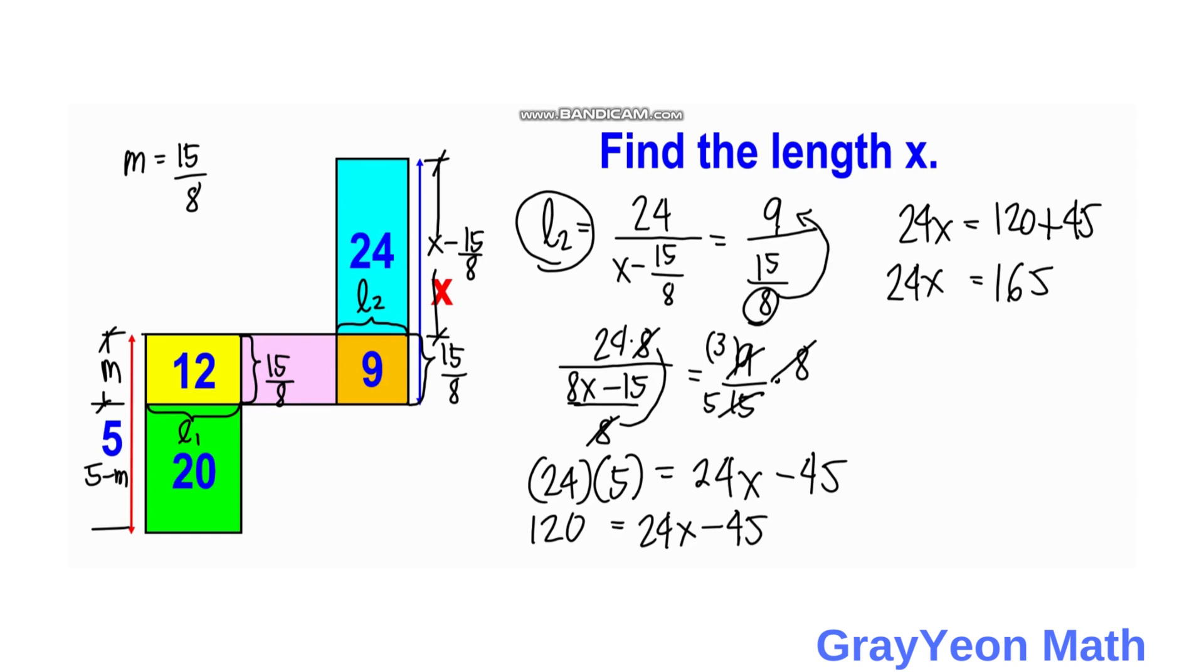So we divide both sides by 24. So we cancel this, and 165 is divisible by 3, so we have 55, and 24 is divisible by 3 also, and we have 8. So we have the value of X is equal to 55 over 8 units.